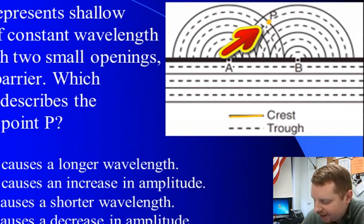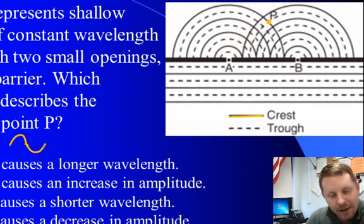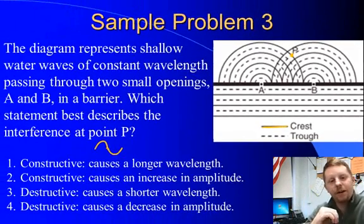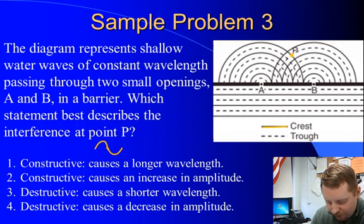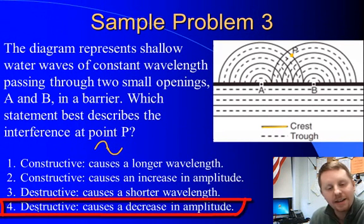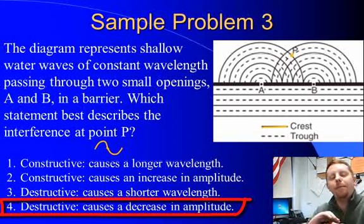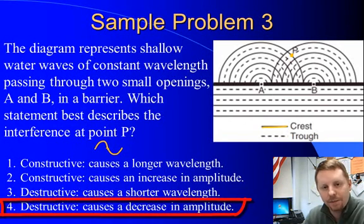So, at point P here, I can see I have a crest and a trough meeting. I have a crest meeting a trough in the opposite direction. So, when those overlap, we've got one up, one down, as they cross each other, they should completely negate. Destructive interference is going to cause a decrease in amplitude, so our correct answer here must be four. They have opposite displacements, so when they meet, those will negate each other and we will get a decrease in their overall amplitude.